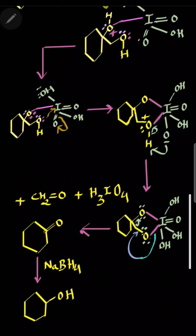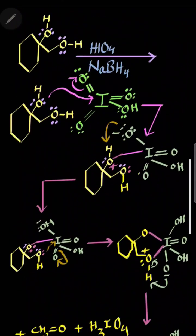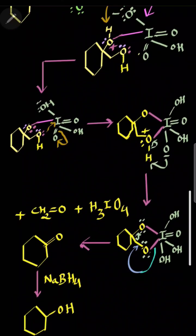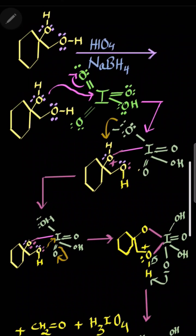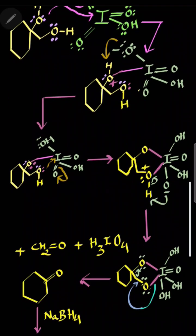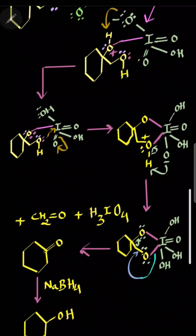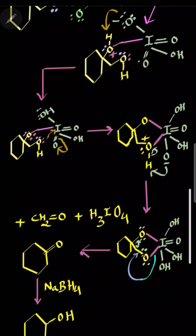This cyclic ketone will react with sodium borohydride, meaning it undergoes reduction, and you will produce cyclohexanol. So very easily you can convert your diol to a simple monohydric alcohol using this combination of the Malaprade reaction and reduction. I hope you understood — if so, please like the video and subscribe to Tetrahedron Chemistry Classes.